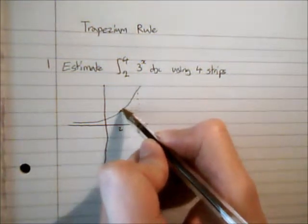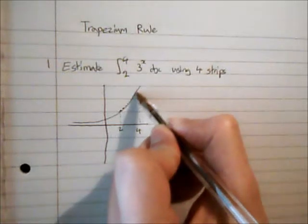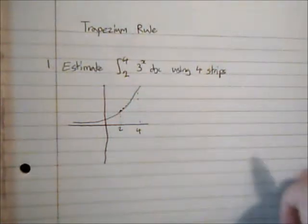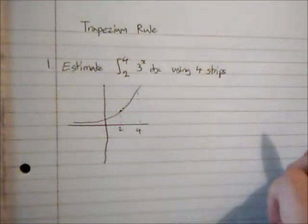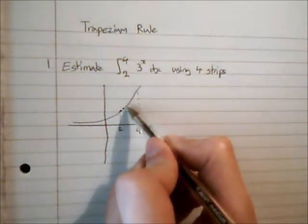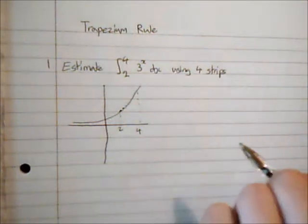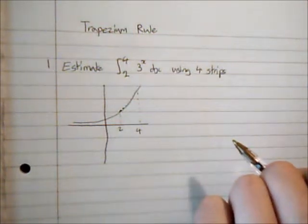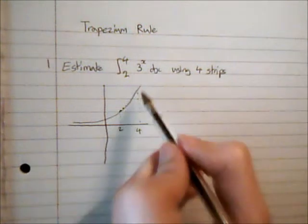Now if I just join up those two points we can see that we get a trapezium, and it's roughly the same as the curve. But there is a small area between the top of the trapezium and the curve, so we are going to slightly overestimate the area here if we use one trapezium.